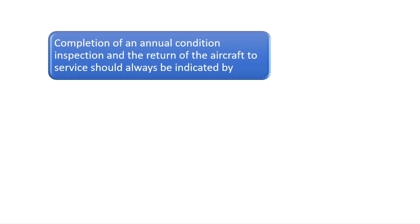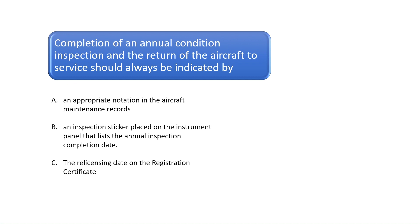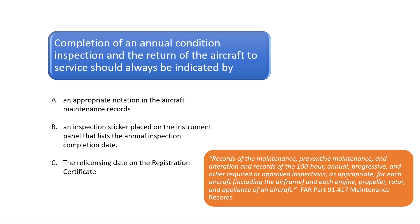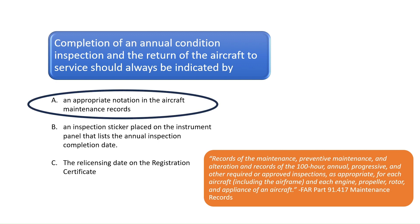Question 8: Completion of an annual condition inspection and the return of the aircraft to service should always be indicated by? According to FAR Part 91.417, documentation of an annual condition inspection should always be logged in the aircraft maintenance records. The correct answer is A.